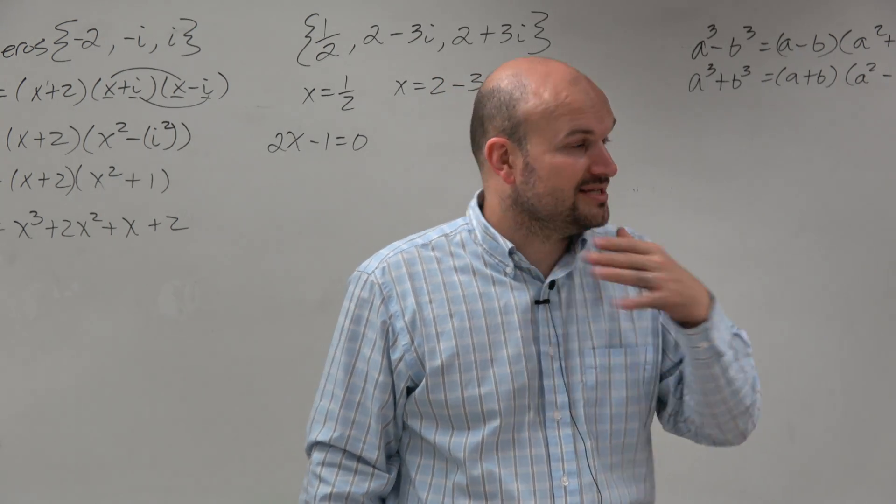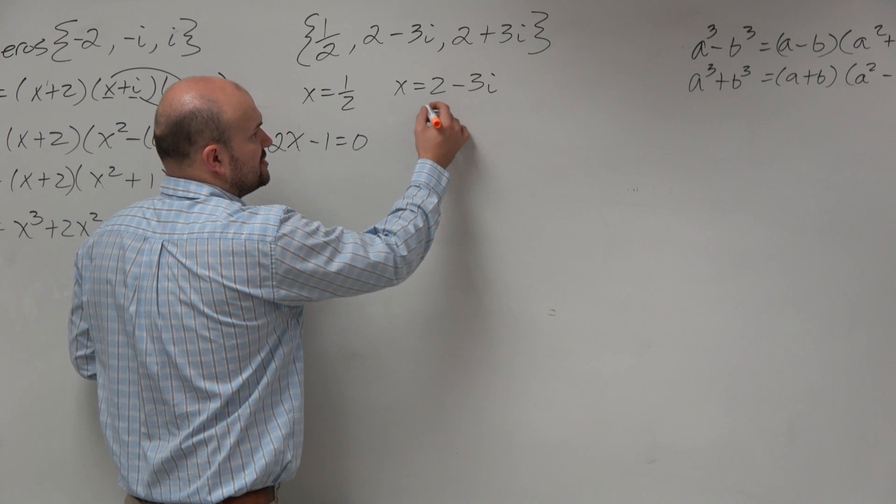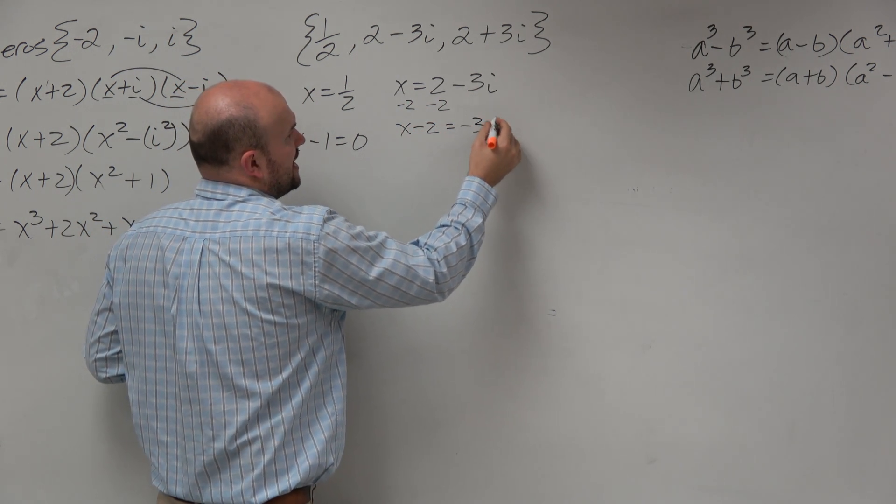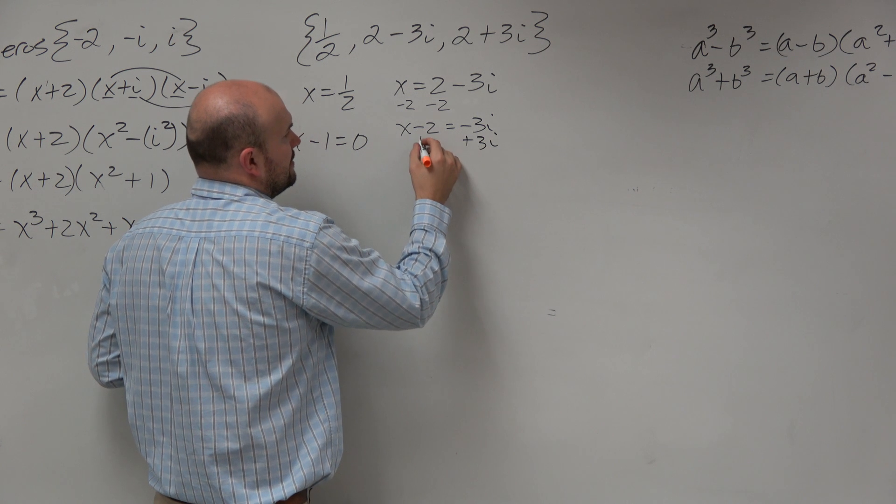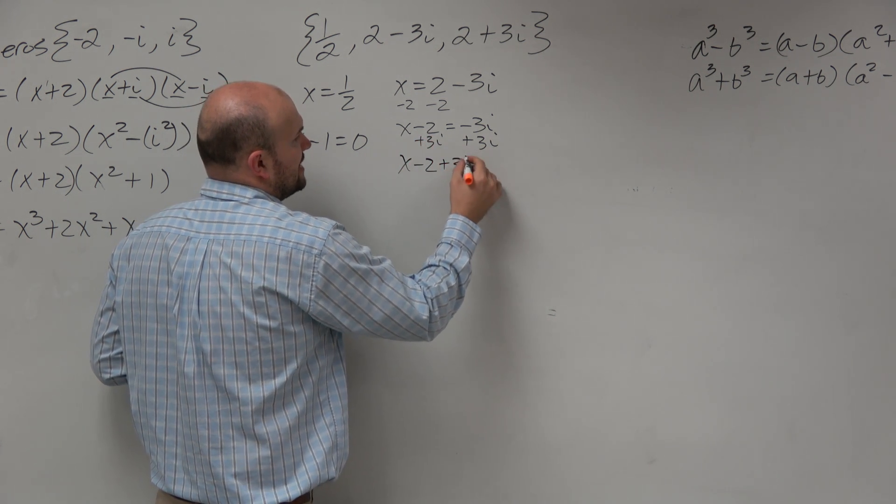Now, the next thing is, guys, using inverse operations is not that difficult here. If you're just subtracting 2, x minus 2 equals negative 3i. Add 3i, add 3i. x minus 2 plus 3i equals 0.